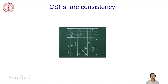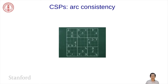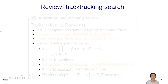Hi, in this module, I'm going to be talking about the notion of R-consistency. This is going to lead us to a look at an algorithm called AC3, which is going to enable us to prune domains much more aggressively than before in the context of backtracking search.